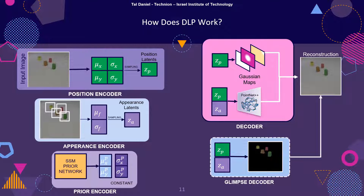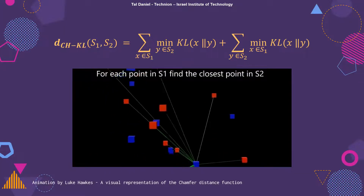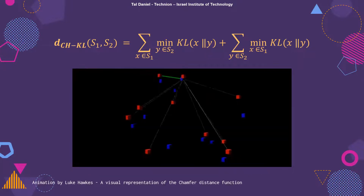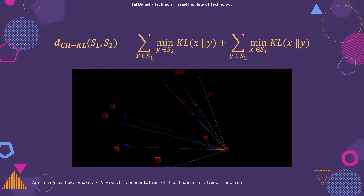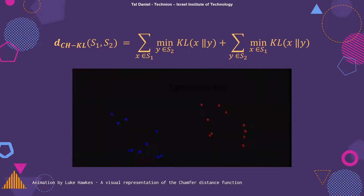However, here we have two unordered sets: the posterior latents and the proposals from the prior. To account for this, we propose a novel modification for the KL divergence term in the ELBO. The Chamfer KL is based on the Chamfer distance for point clouds and replaces the standard KL divergence term in the ELBO for the position latents. Intuitively, the SSM-based prior proposes interesting locations for keypoints. The posterior, not limited by the averaging operation of the SSM, picks good locations that align with the reconstruction objective.